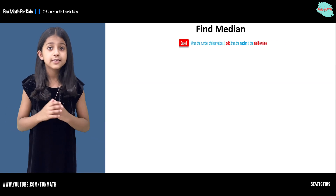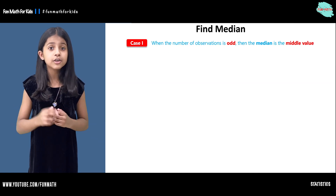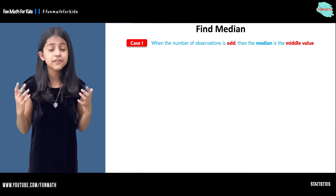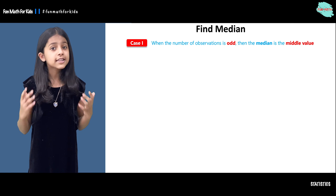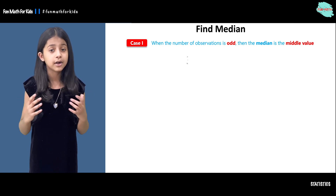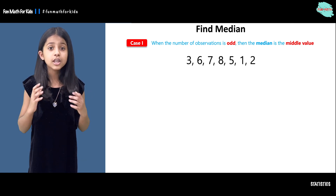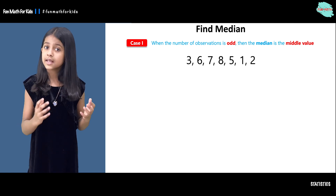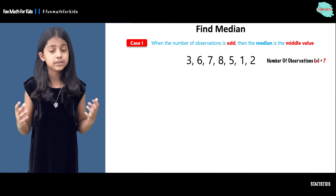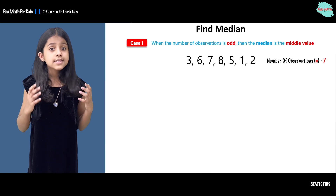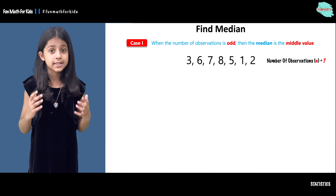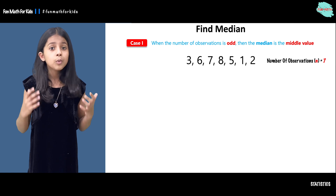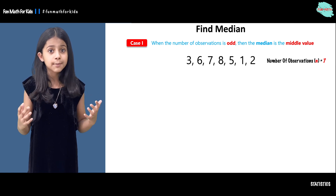Let's find the median. Here there are two cases. In case one, when the number of observations is odd, then the median is the middle number. So here we have a sequence: three, six, seven, eight, five, one, and two. There are seven numbers in the sequence. In order to find the median, we are going to follow some steps.